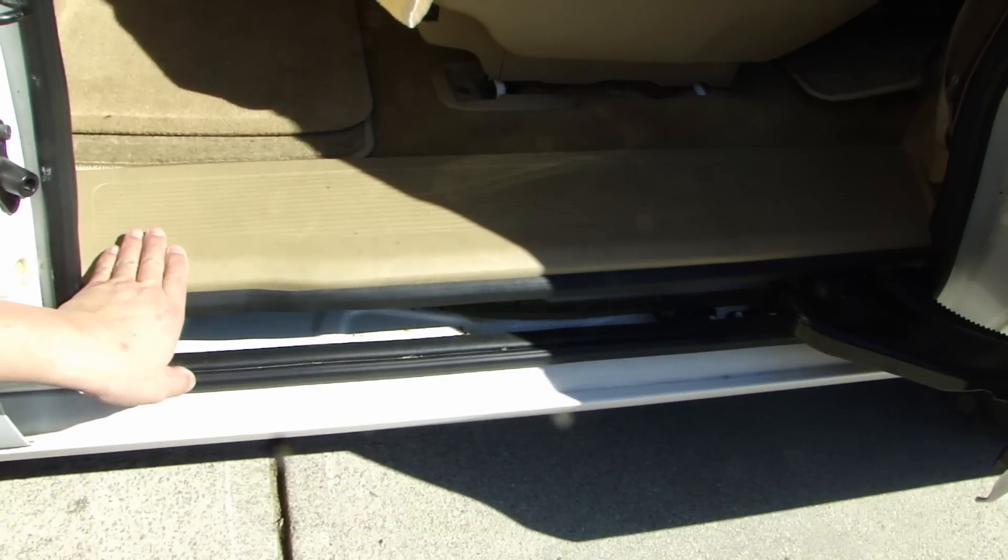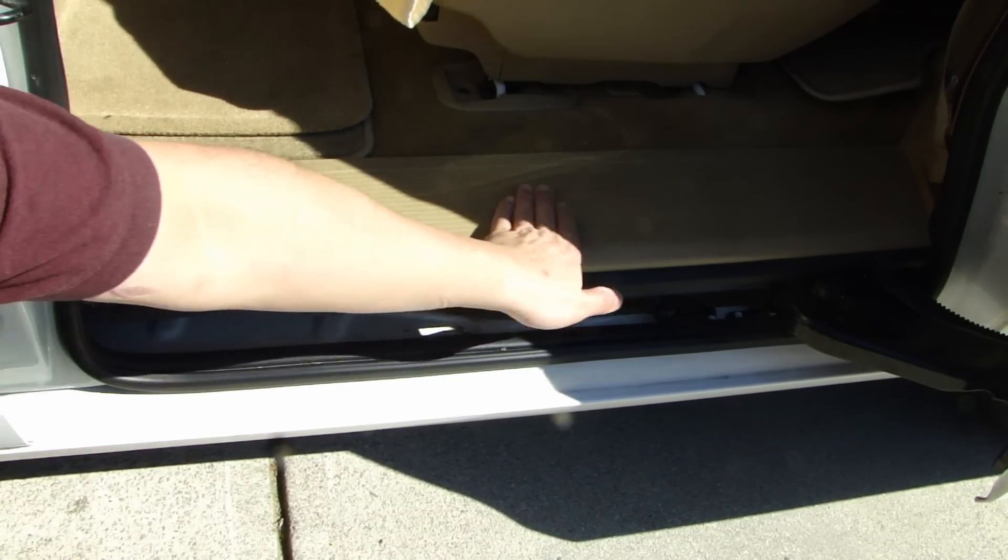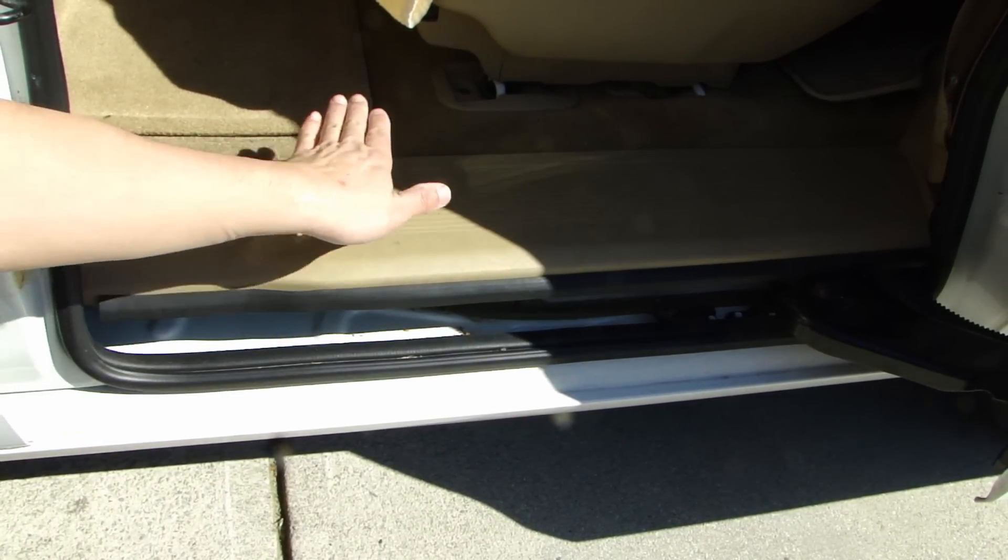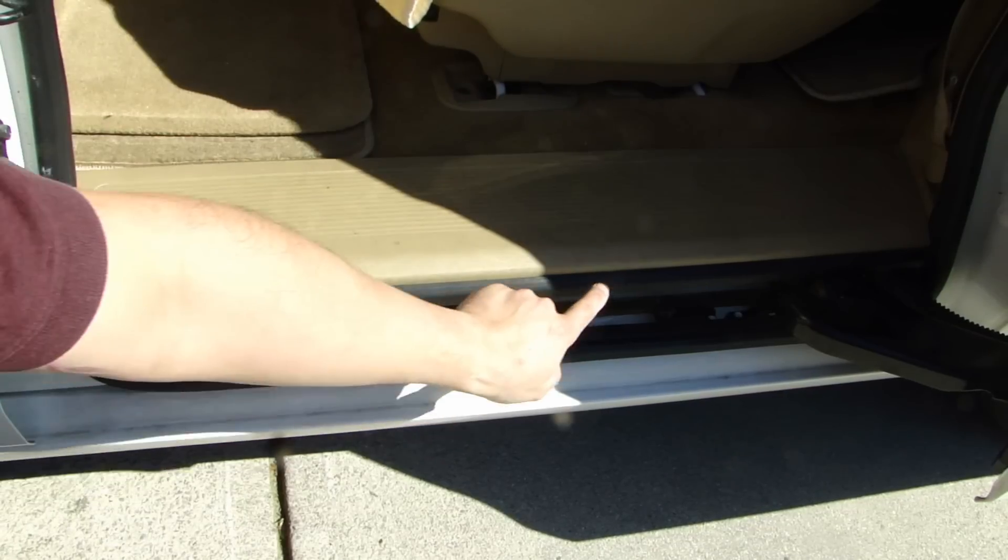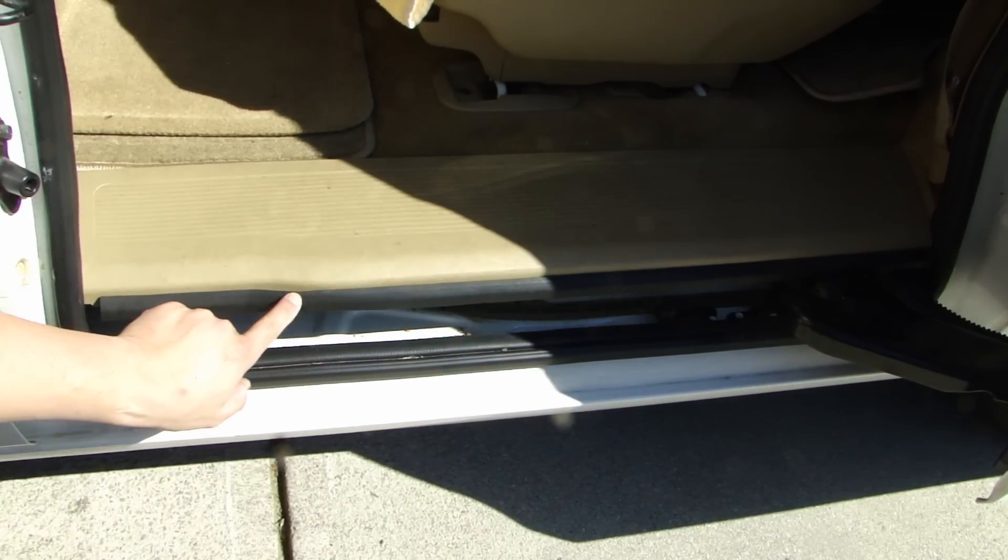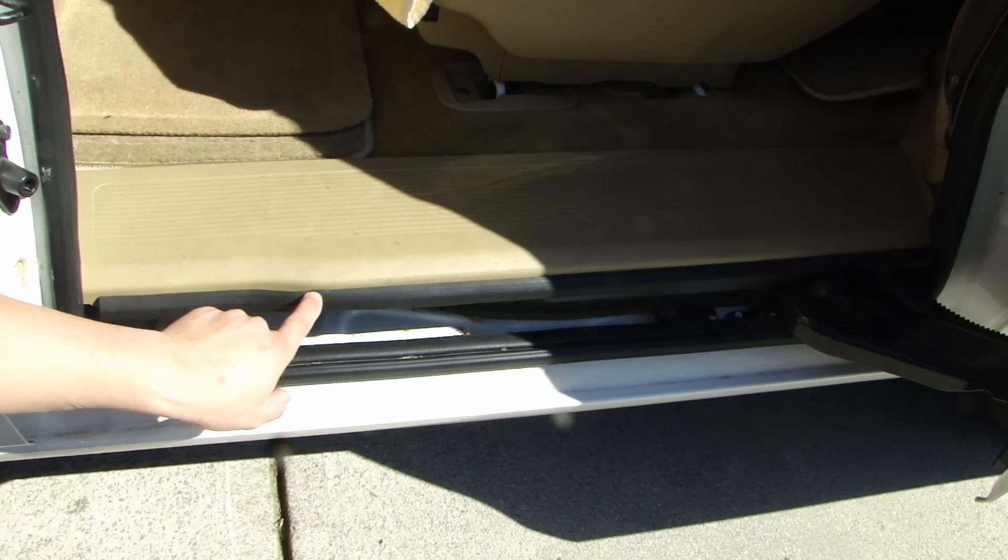So here's a closer look at the side step that I'm referring to. This plastic piece is where you would step up to get into the van. Along this edge is a rubber molding. This is the piece that gets damaged a lot.